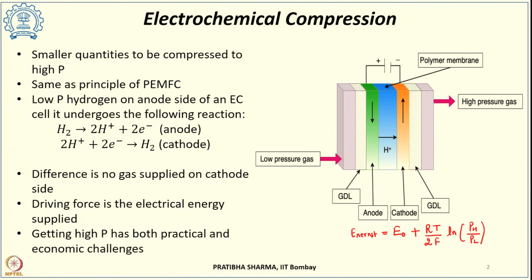To address back diffusion, the membrane can be made thicker. But if the membrane is thickened, the membrane resistance increases, ohmic losses increase, and efficiency decreases. So for higher pressures as well as higher flow rates, the efficiency of the electrochemical cell reduces.